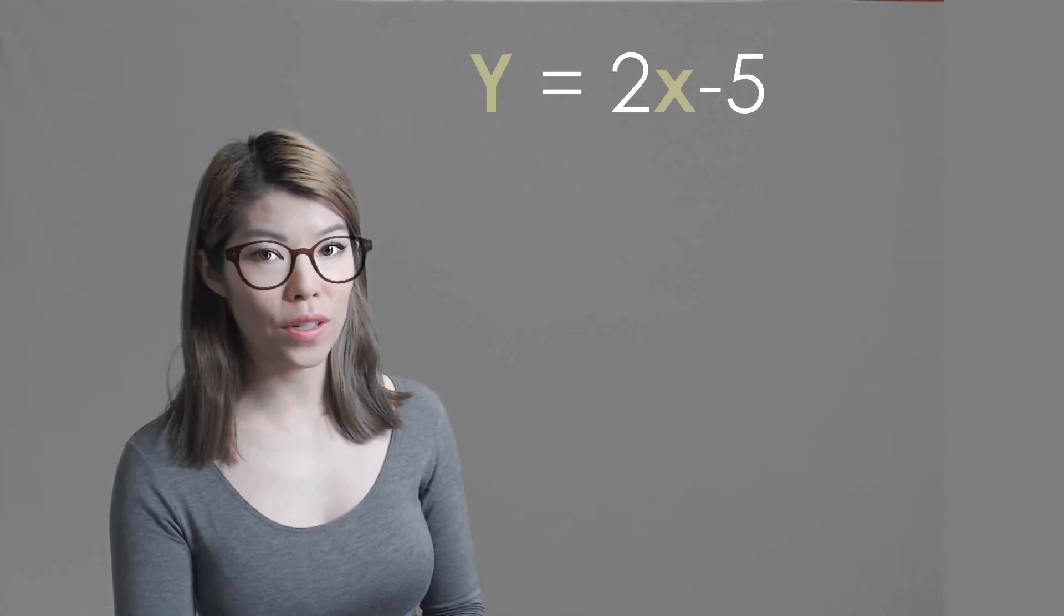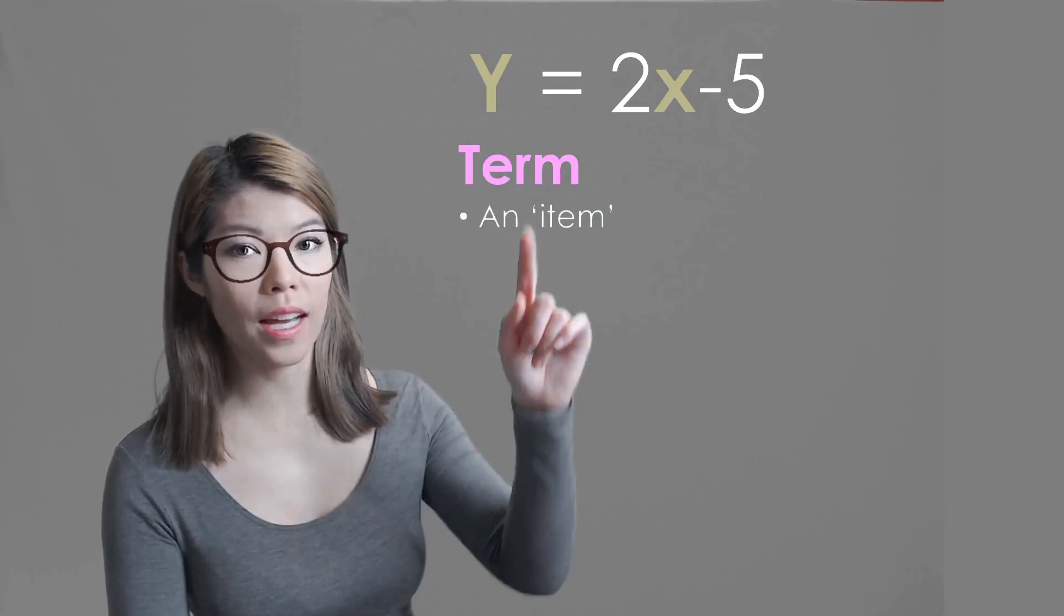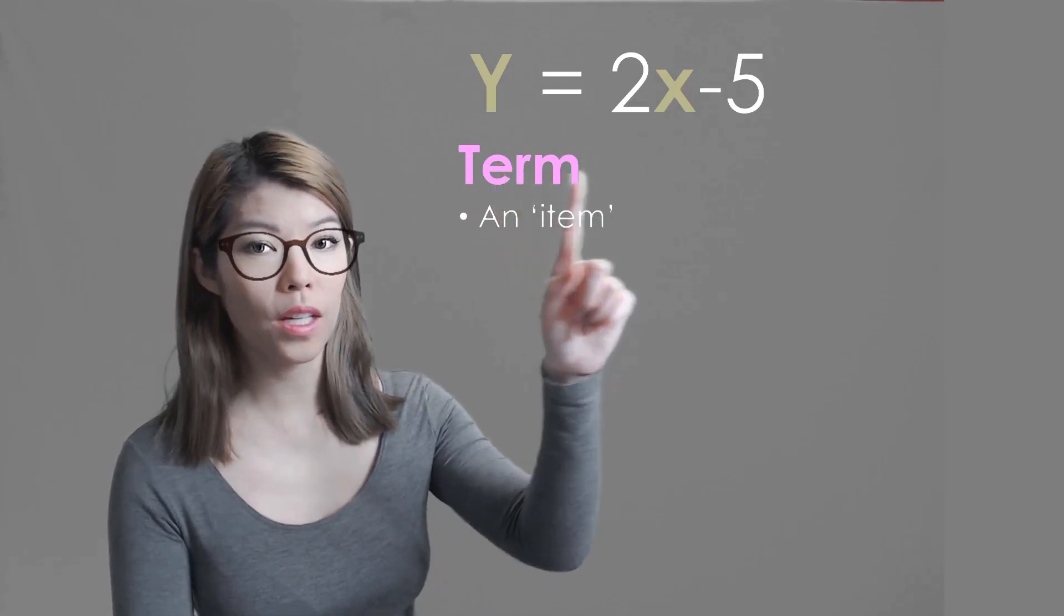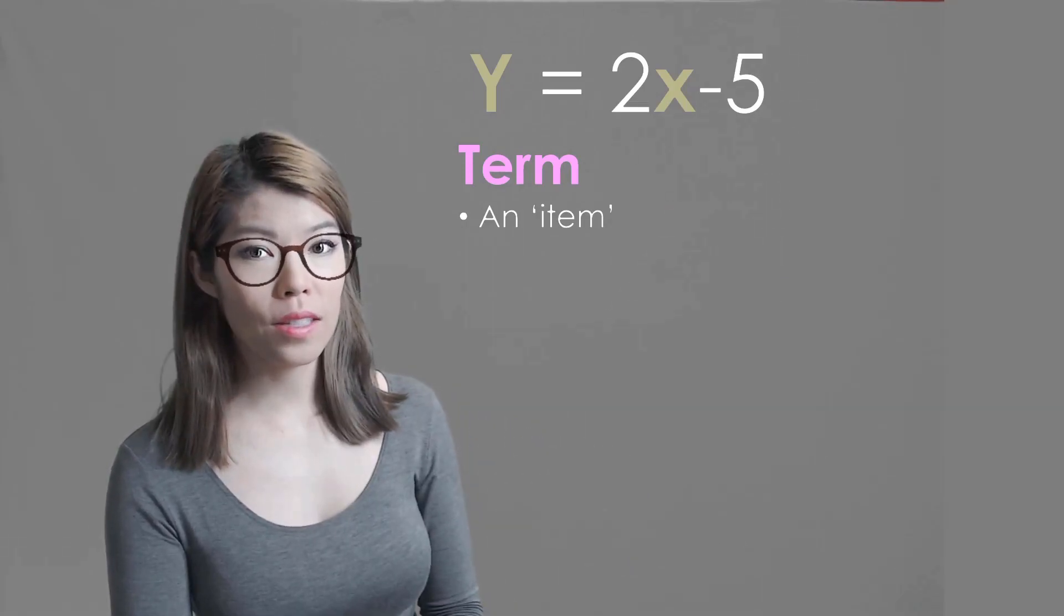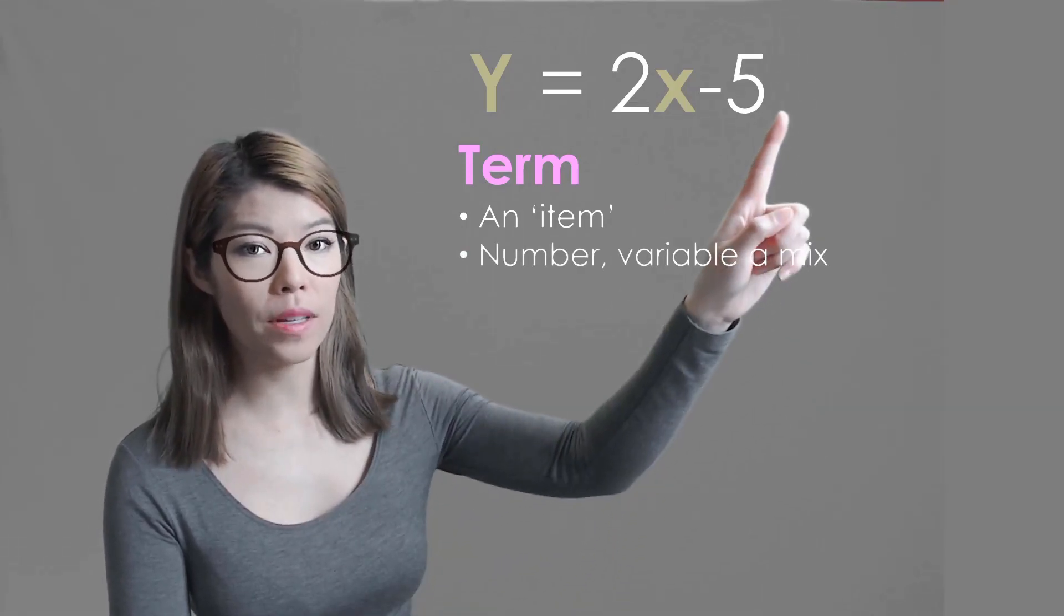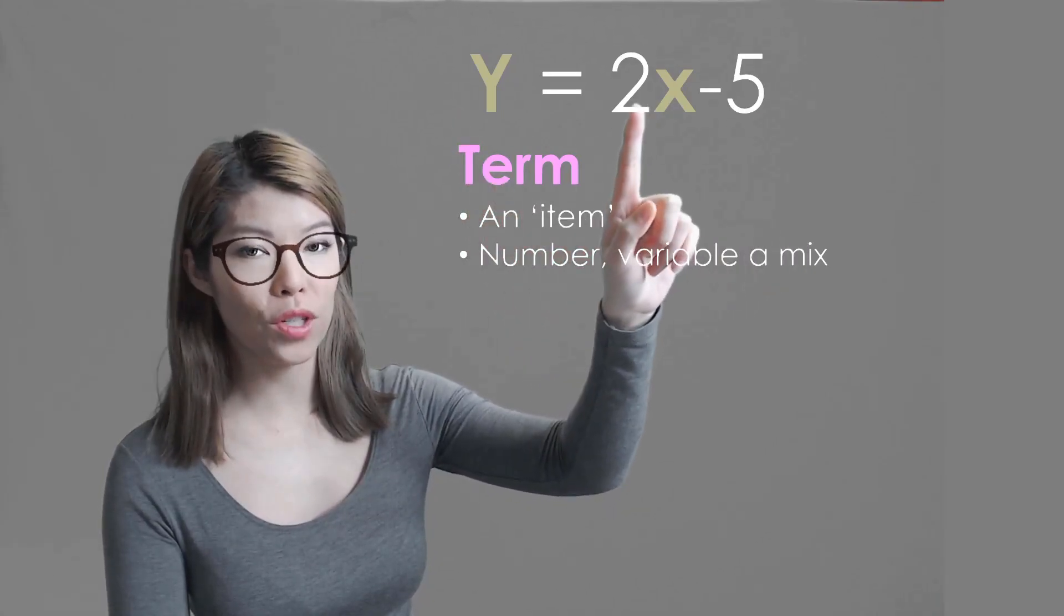Let's revise another three words: term. The word term means items. In this case we have y is a term, 2x is a term, and minus 5 is a term. These terms, as you can see, can be numbers like minus 5 or they can be variables like y, or a mixture of the two.